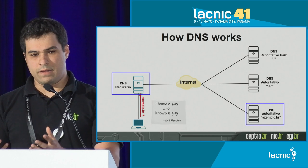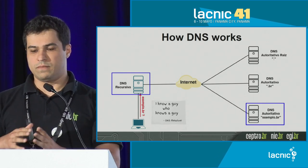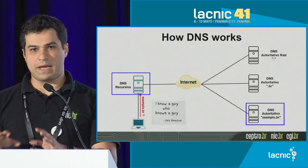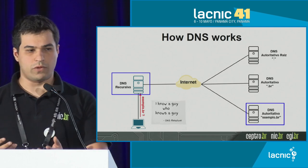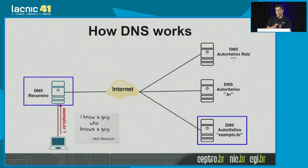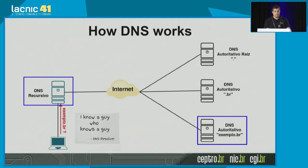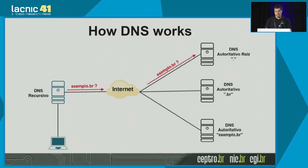How can we understand the way it works? If we put the entire system there, we have some special machines we need to understand in order to configure them. We have the recursive DNS machine, the authoritative DNS, and the root authoritative DNS. So we have a computer that wants to access a certain site, for instance .br, and it sends a recursive DNS query that goes to seek that information for us.